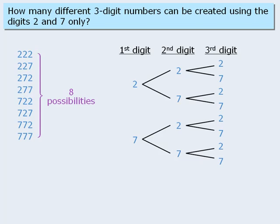Now, how is this tree related to the solution to the question? Well, notice that each path in this tree represents one of the possible outcomes. For example, this path represents the number 222, and this path represents the number 727.